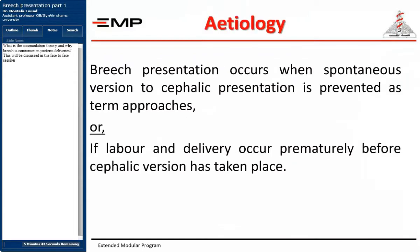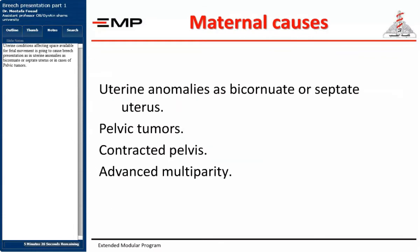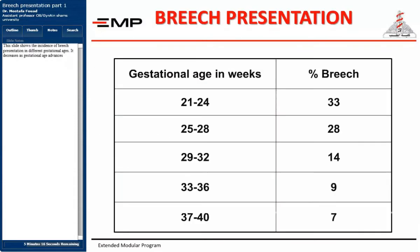The accommodation theory explains why breech is common in preterm deliveries. Fetal conditions affecting fetal size, fetal activity, and ease of fetal movement in utero can cause breech presentation. Uterine conditions affecting space available for fetal movement — such as uterine anomalies like bicornuate or septate uterus, or pelvic tumors — also cause breech presentation. The incidence of breech presentation decreases as gestational age advances.